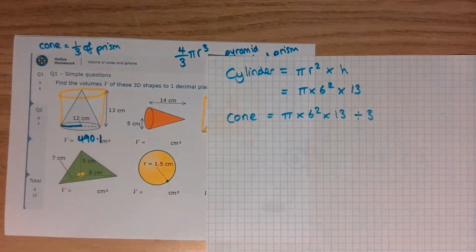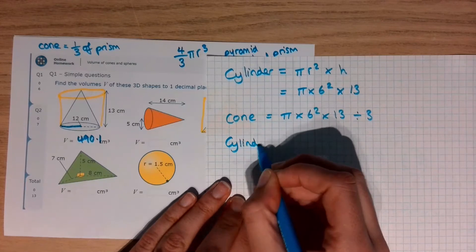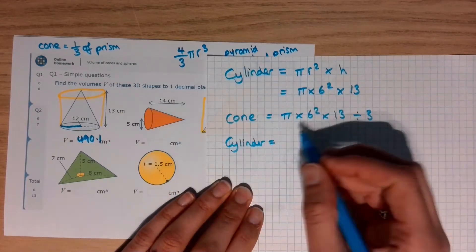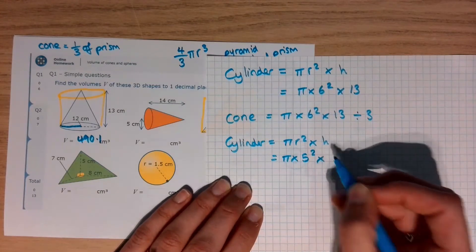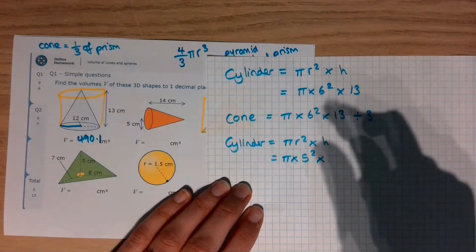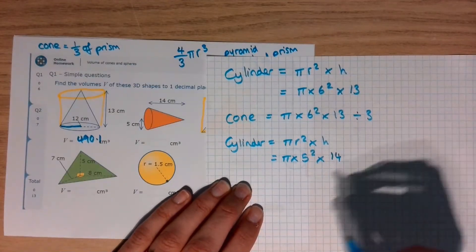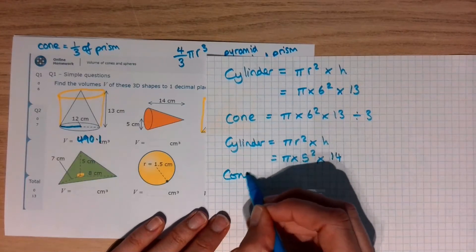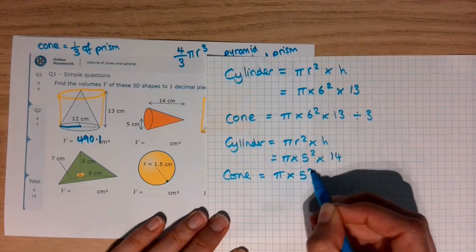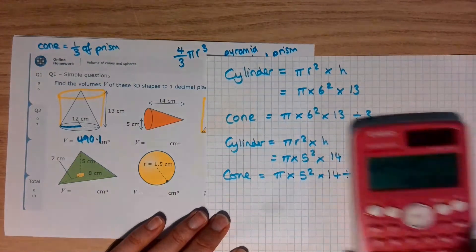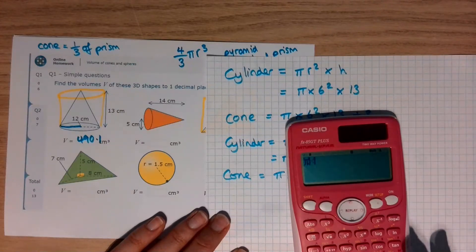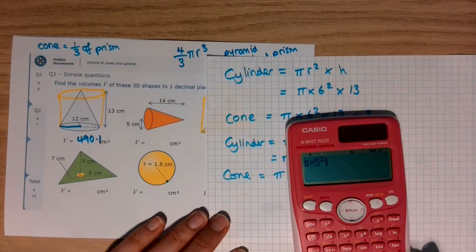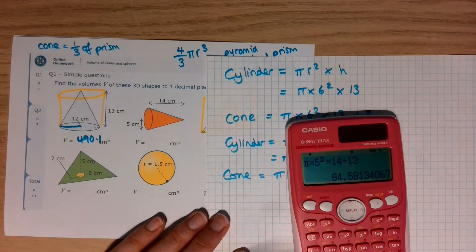We have another cone. It's on its side. That doesn't change anything. So, first of all, think about it as a cylinder. A cylinder is the circle times by the height, which is pi r squared times by the height, which is pi times, this time it has given us the radius, 5 squared times by, I think it's not really the height, it's the length. So, just imagine it's standing on its bottom, 14. I'm not going to put that into my calculator. I'm going to think about the cone. The cone is exactly the same as the cylinder, but it's divided by 3. I'm going to put that into my calculator, which is pi times 5 squared times 14 divided by 3. 84.58, rounded to 1 decimal place, 84.6.